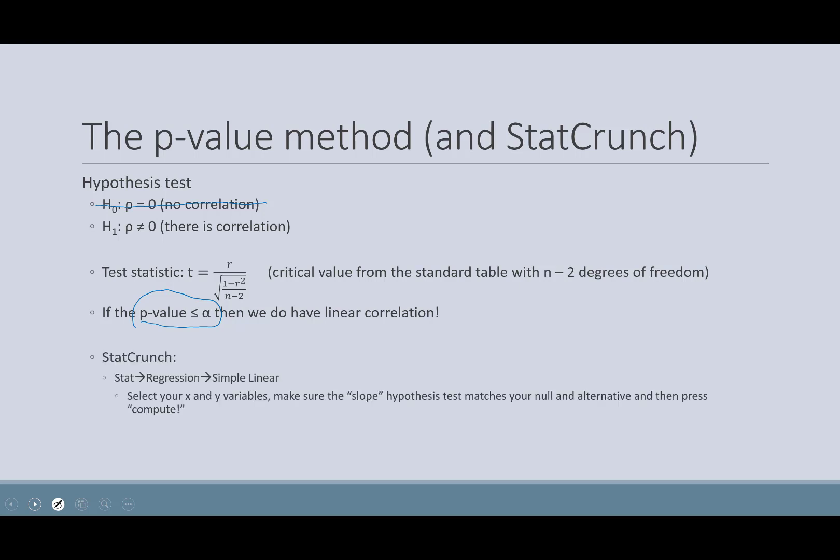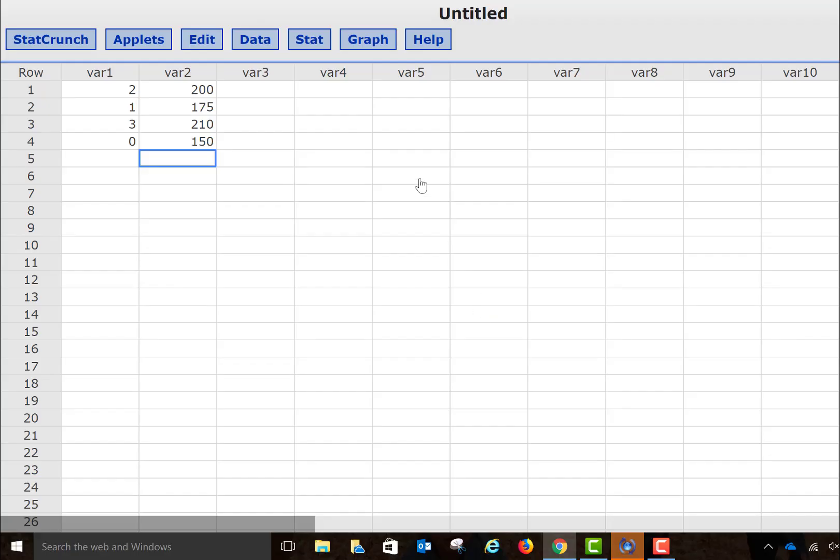So, p-value being less than alpha is still the same as it was for all of the other ones. Now, once we get into StatCrunch, we just have to go to a slightly different menu than what we did before when we were calculating the straight correlation.